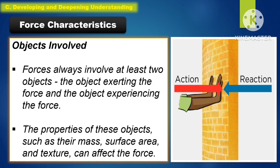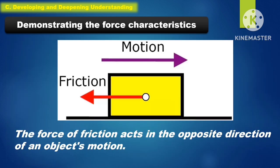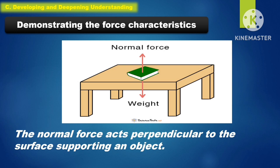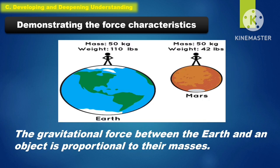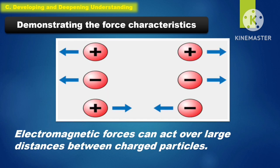Forces always involve at least two objects — the object exerting the force and the object experiencing the force. The properties of these objects, such as their mass, surface area, and texture, can affect the force. The force of friction acts in the opposite direction of an object's motion. The normal force acts perpendicular to the surface supporting an object. The gravitational force between the Earth and an object is proportional to their masses, and electromagnetic forces can act over large distances between charged particles.